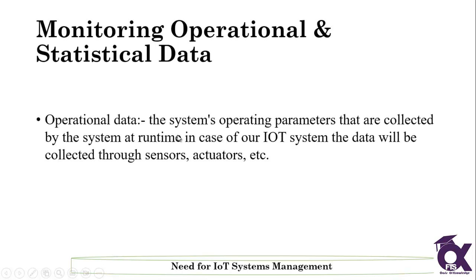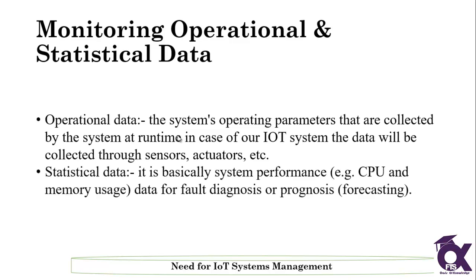Operational data refers to the system operating parameters collected by the system at runtime. In an IoT system, the data is collected through sensors and actuators. The data collected at runtime is our operational data, and the data after the operation — such as the performance of the CPU — is called statistical data. This data will be in the form of fault diagnosis or forecasting for the system.